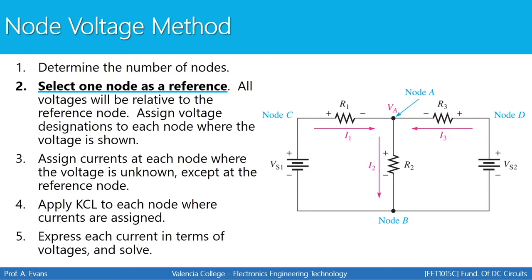On the screen you'll see a summary of the steps to use the node voltage method. When you're done you will have equations that allow you to solve for unknown quantities such as the current through a resistor or the voltage at a specific point. First, you have to determine the number of nodes. You're going to select one node as a reference — the reference node is always where ground would be located, which is where all current returns to the path it originated from.